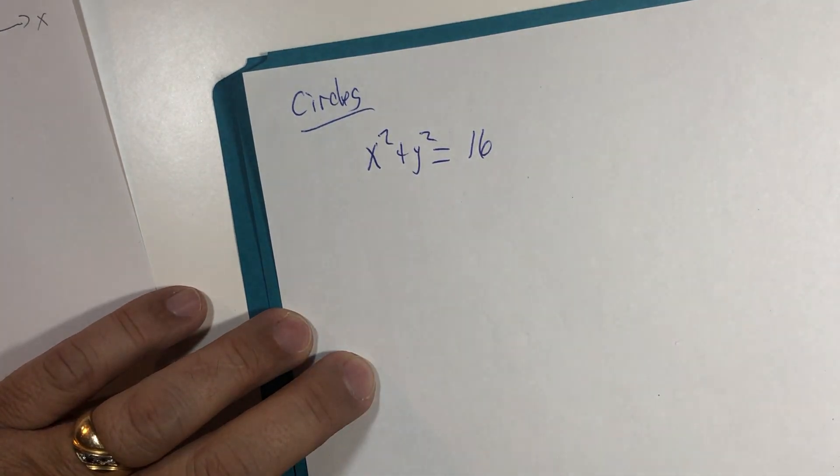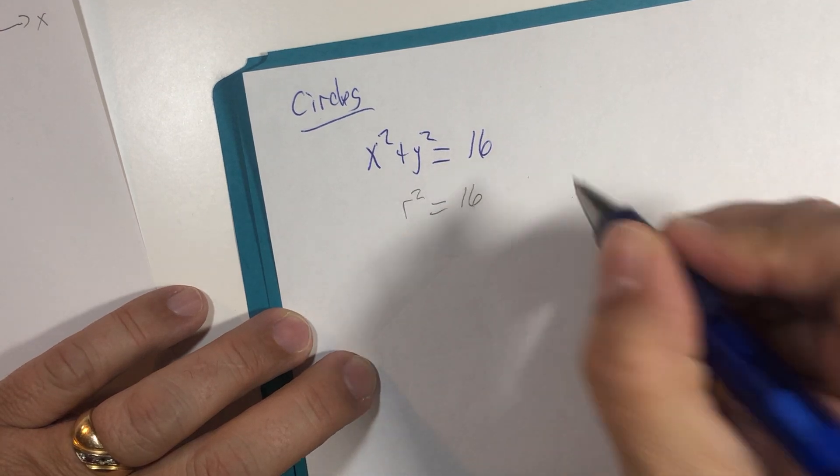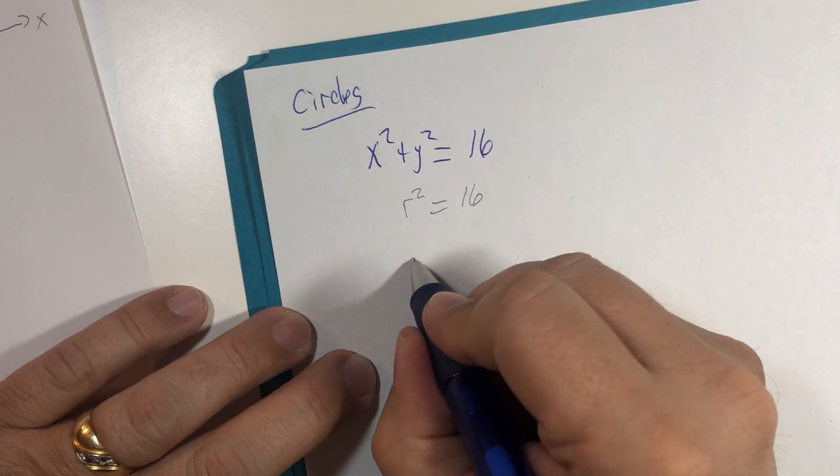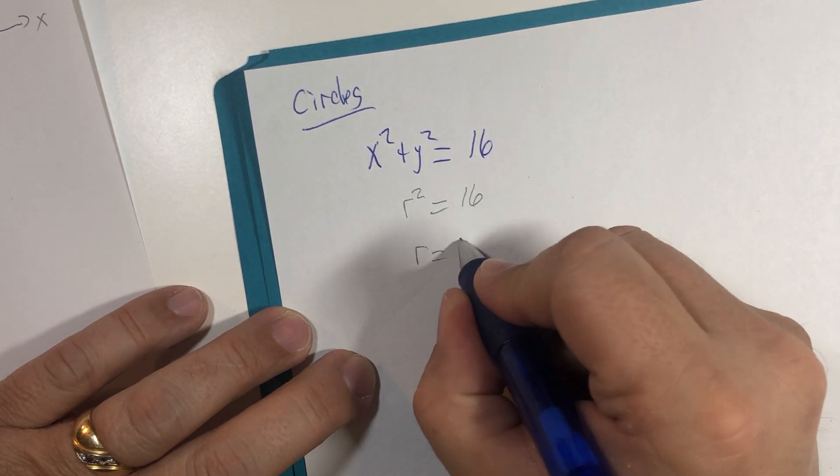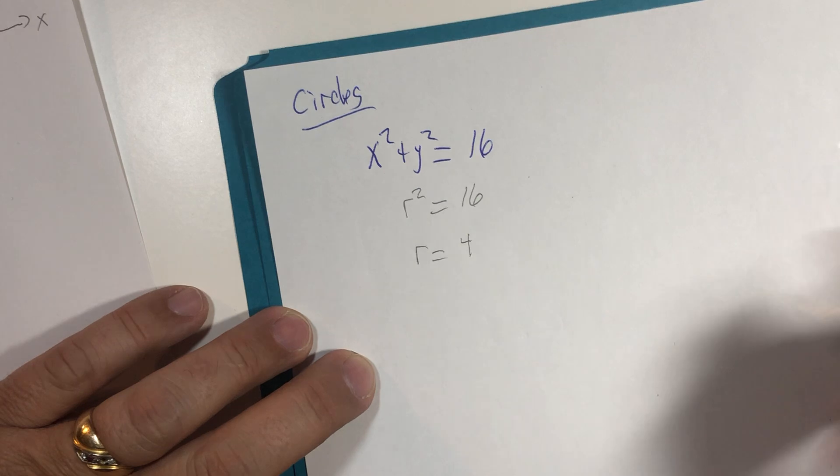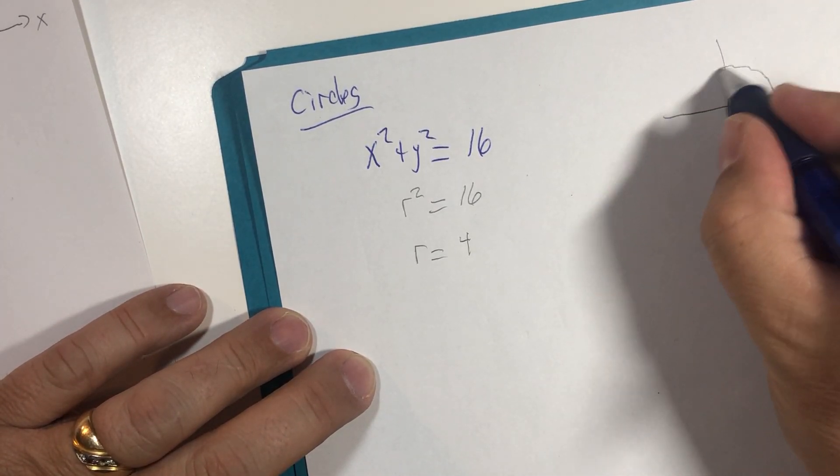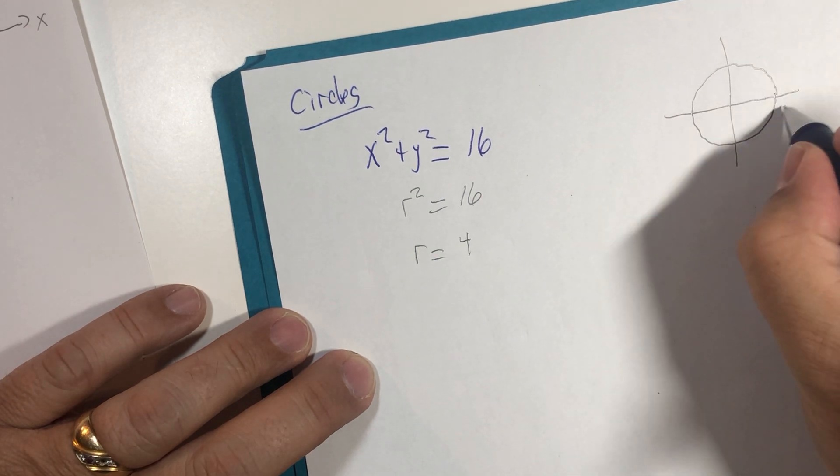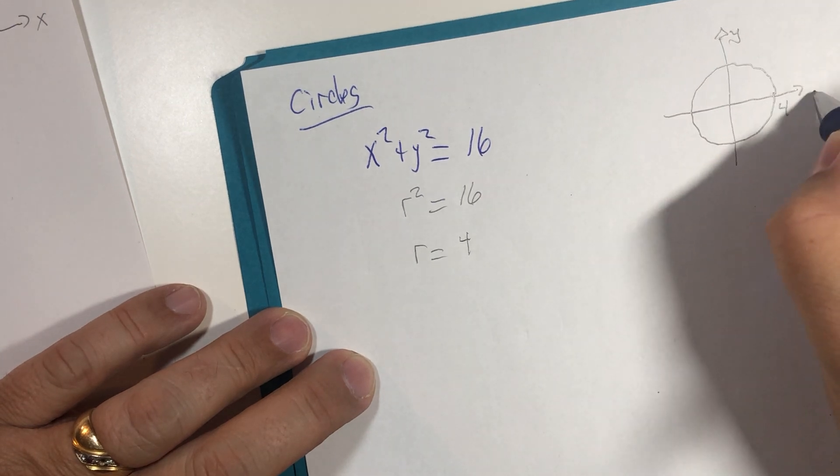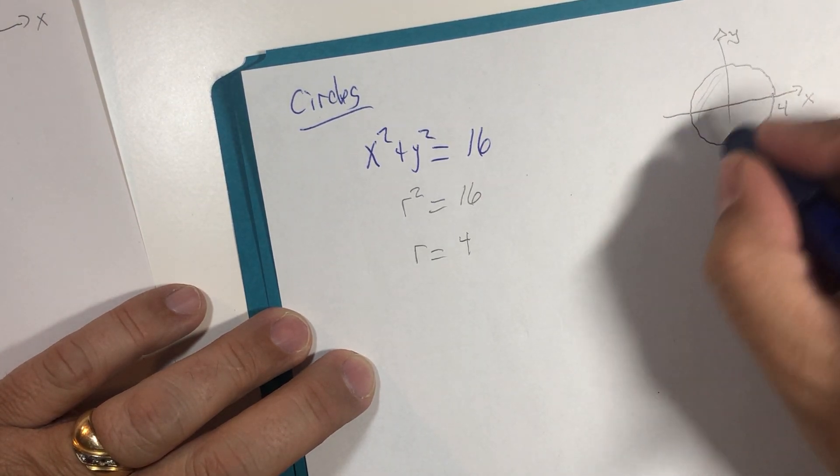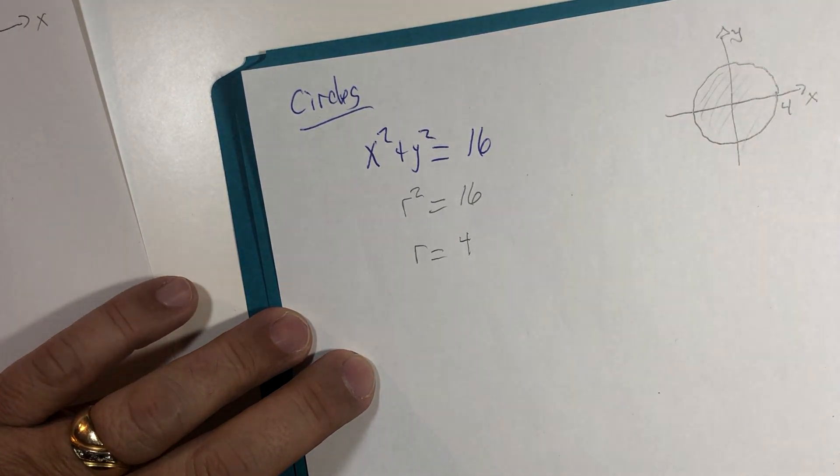But x squared plus y squared is equal to r squared. And we take the square root of 16. There are two roots, a positive or negative 4. We're going to just use the positive to identify this circle. That would represent this circle here. Just the circle itself.